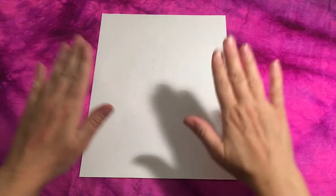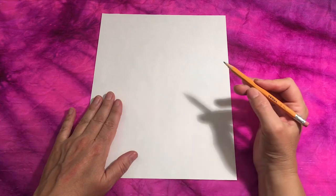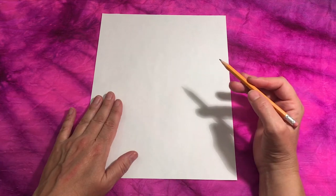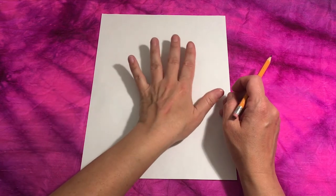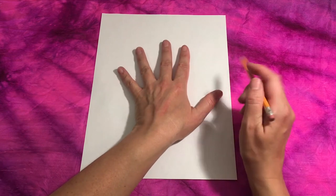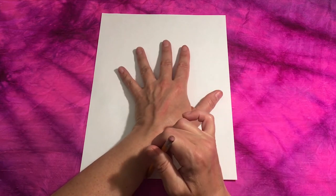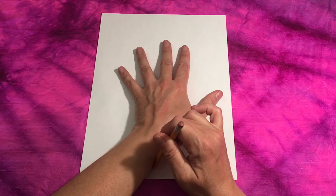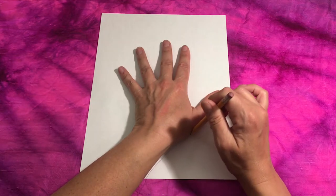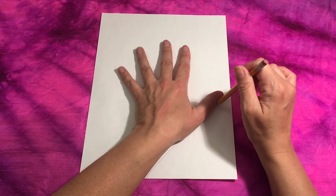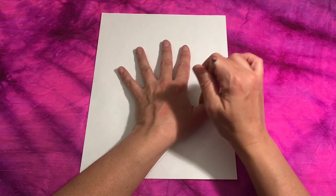For our first step we're going to begin with our sheet of white printer paper and you're also going to need your pencil. We're going to start by tracing around our hand. Start at the bottom of the sheet of paper where your wrist comes onto the page and then slowly and carefully trace around all of your fingers.